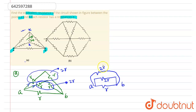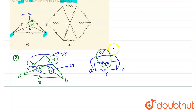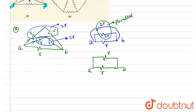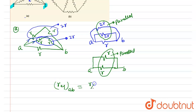What we can observe is that 2R and 2R are in parallel combination. If 2R and 2R are in parallel, it becomes 2R/2, which means the equivalent is R. There is another resistance between A and B which is also R. Both R and R are in parallel, so R equivalent across A and B equals R/2.